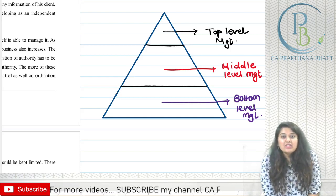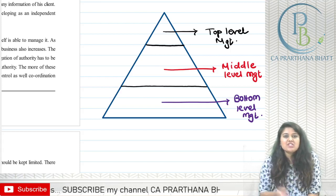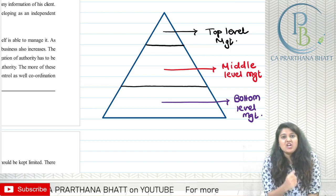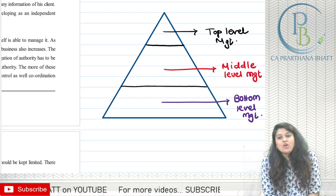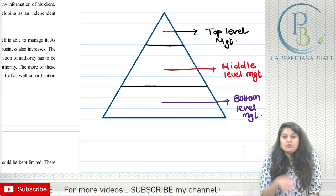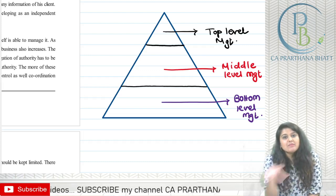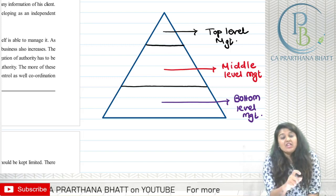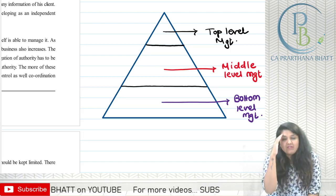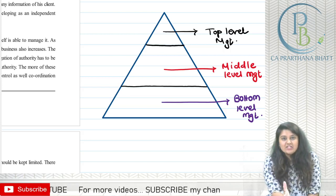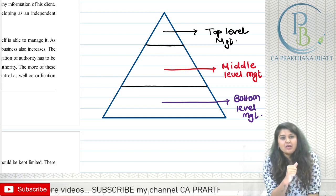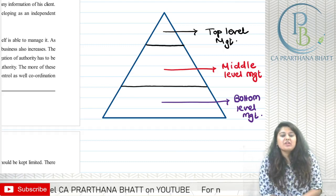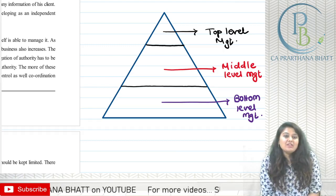When it comes to middle level management in an organization with various processes like production, purchase, sales, finance, accounts, research and development, and HR — all the department heads like production head, purchase manager, sales head, and finance specialists are included. These people have specified knowledge in their particular department and belong to middle level management.